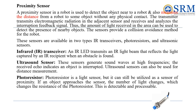The proximity sensor enables a robot to detect nearby objects and measure distance without touching them. It works by sending out a signal and analyzing what comes back, helping the robot avoid collisions. There are three main types. The first is infrared transceivers, which use infrared light to detect objects — when an obstacle is in the way, the reflected light is captured by the sensor.